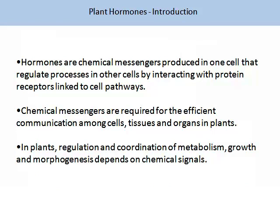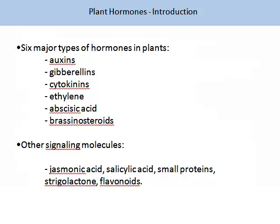We will start this topic on plant hormones with a definition of a hormone. A hormone is a chemical messenger produced in one cell that regulates processes in another cell by interacting with protein receptors which are linked to cell pathways. Chemical messages are required for the efficient communication among cells, tissues and organs in plants. In plants, regulation and coordination of metabolism, growth and morphogenesis depends on chemical signals. There are six major categories of hormones in plants: auxins, gibberellins, cytokinins, ethylene, abscisic acid and brassinosteroids. There are also other signalling molecules such as jasmonic acid, salicylic acid, some small proteins, strigolactone and flavonoids.